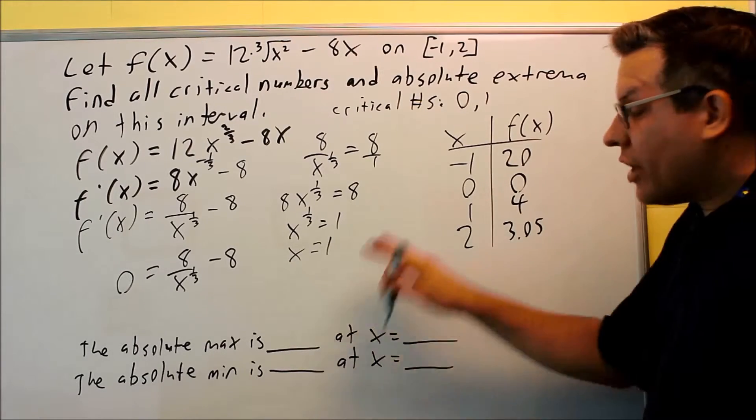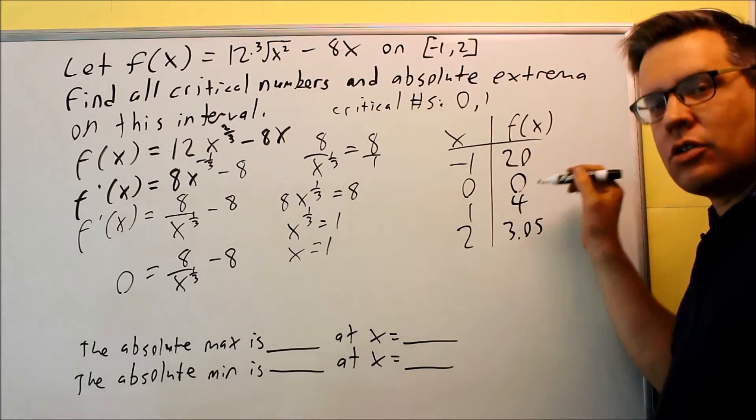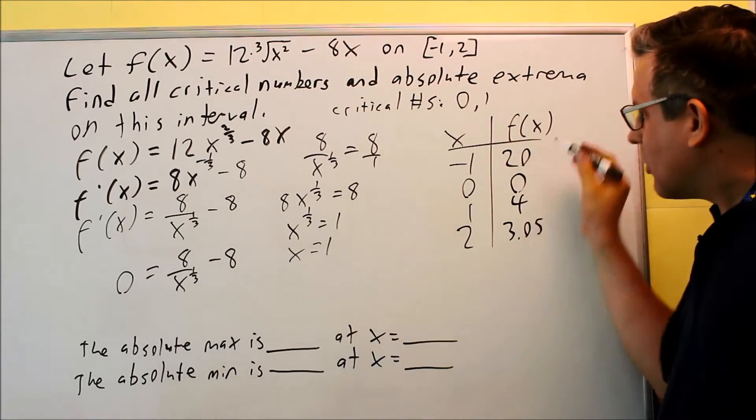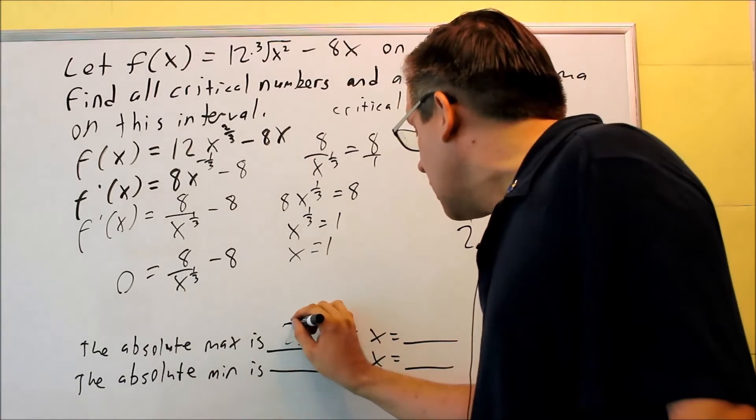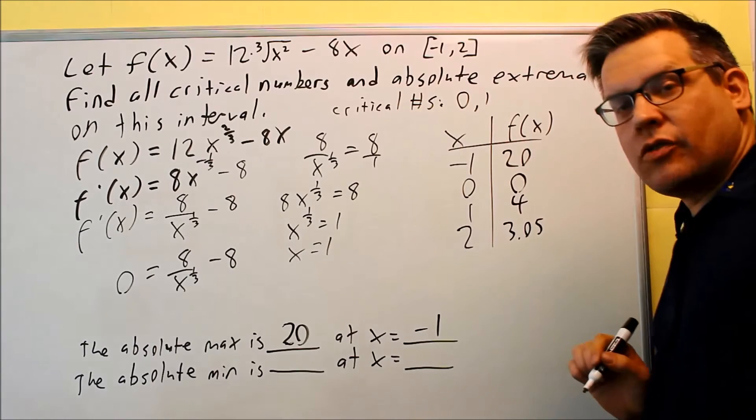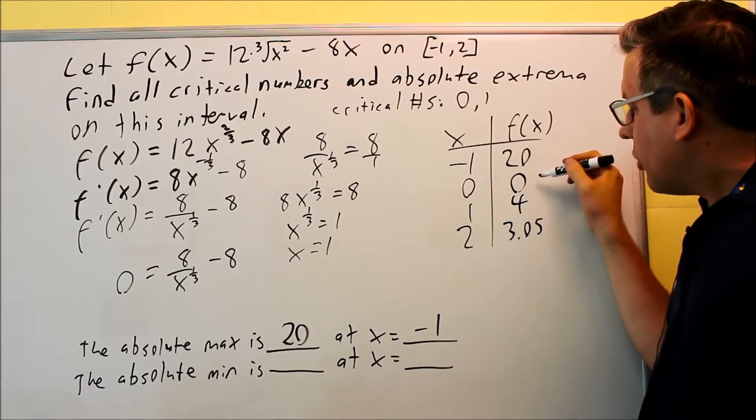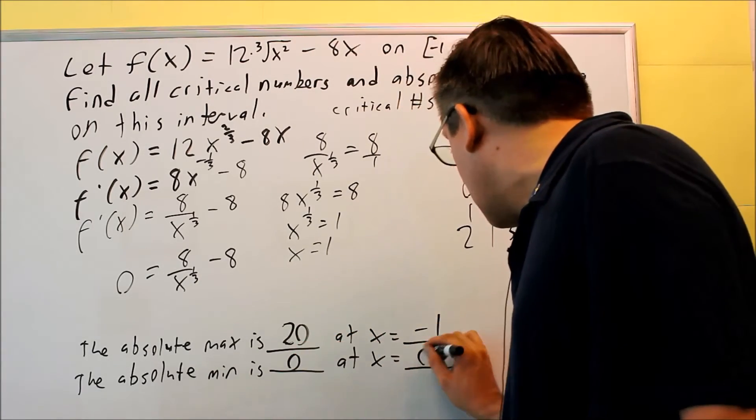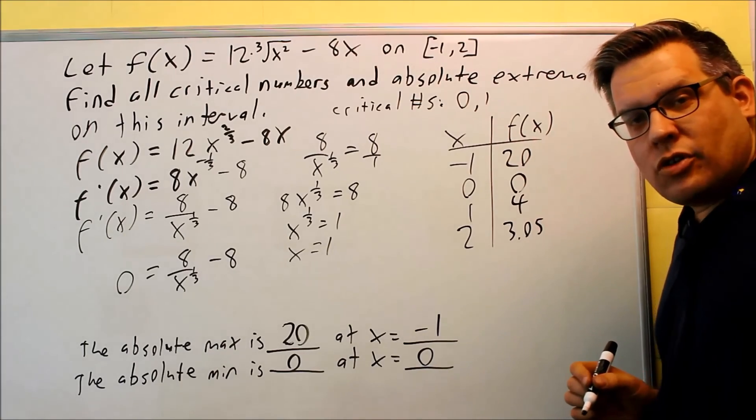So in order to answer this, you'll look at the highest y value and the lowest y value. The absolute max is going to occur at the highest y value. The absolute max is going to be 20, and that's going to occur at x equals negative 1. The lowest y value you see on this table here is 0. So the absolute min is 0, and that's going to occur at 0, because that goes to that point (0, 0).